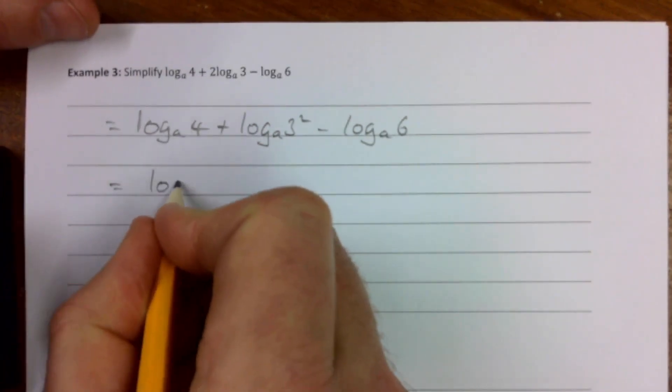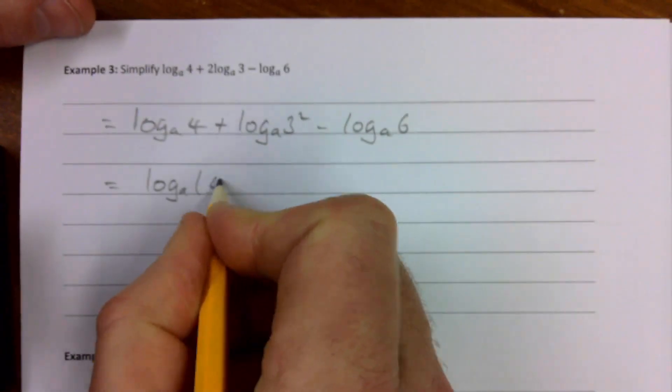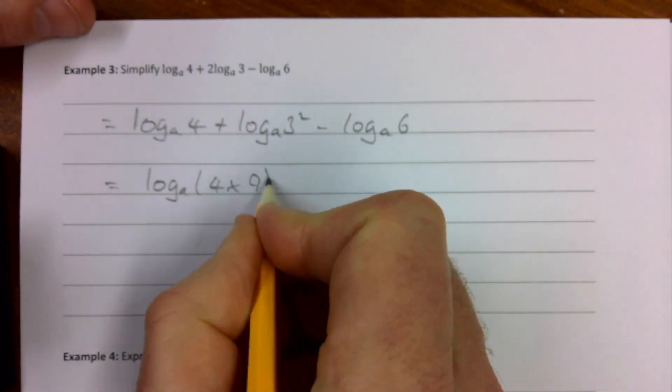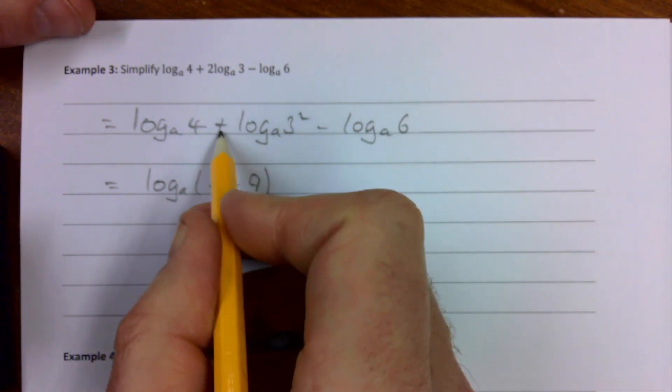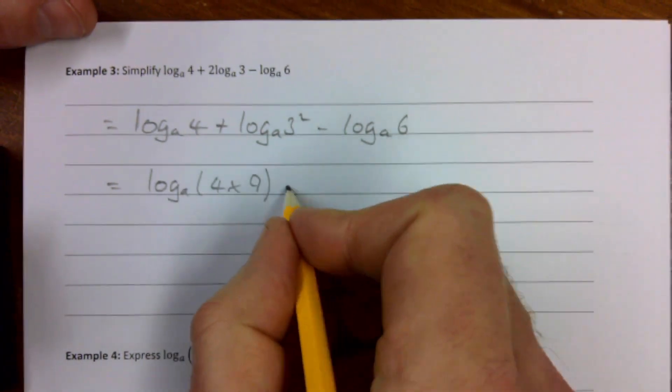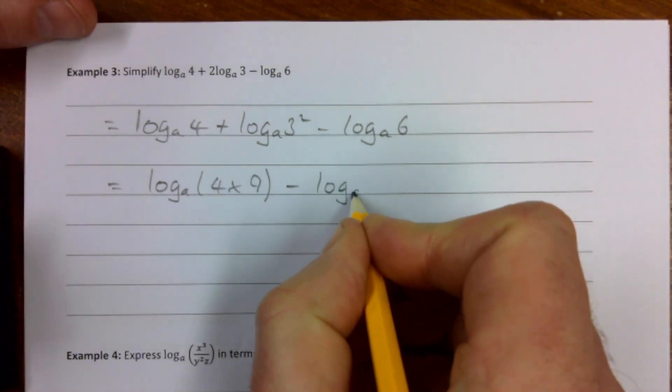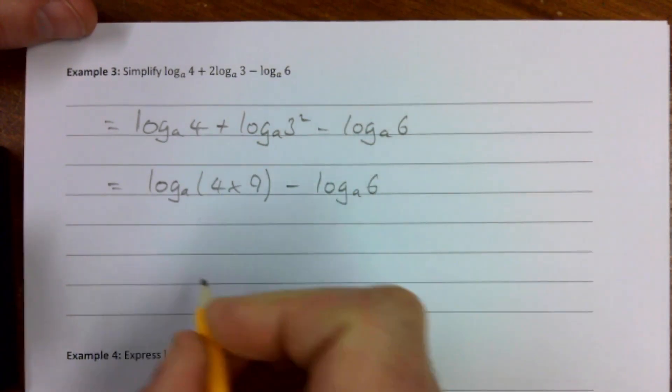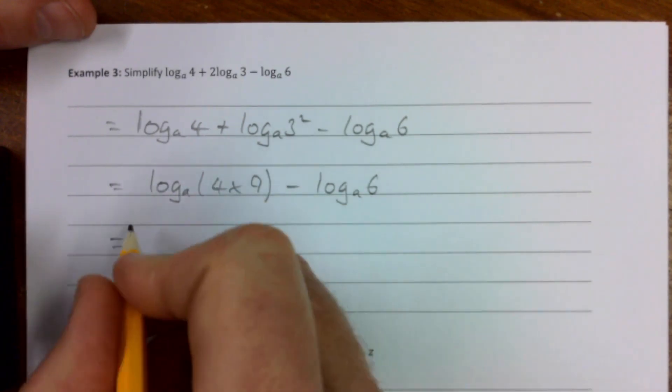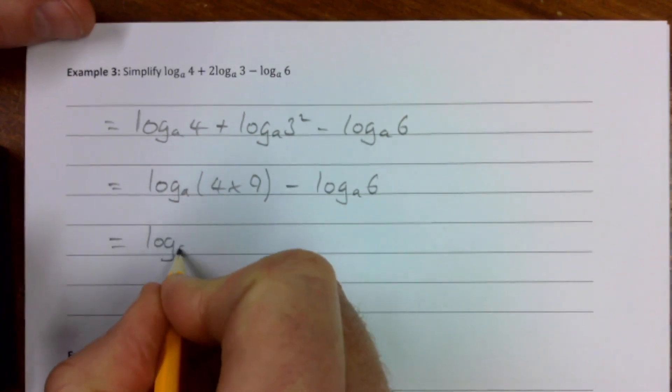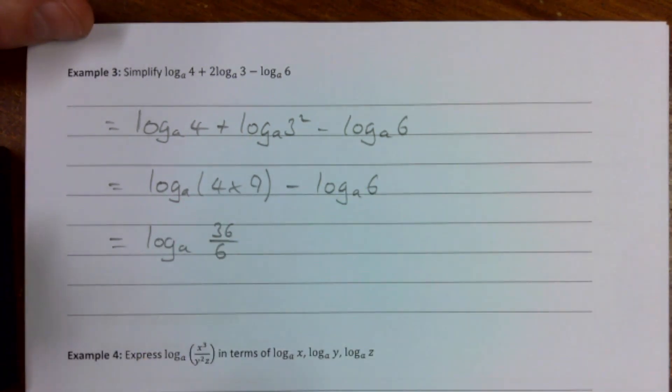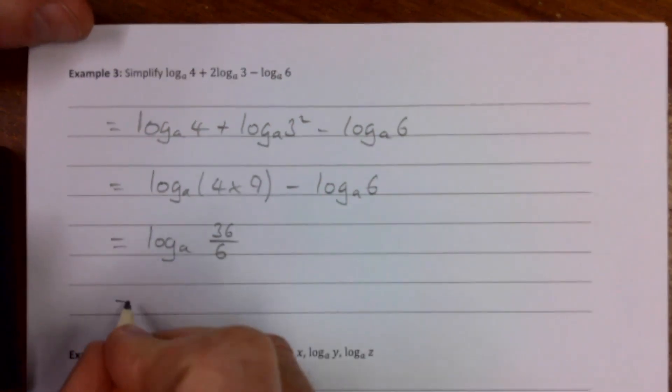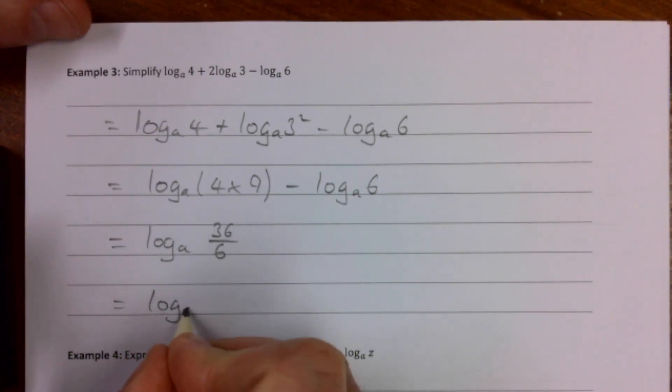That equals log to the base a of 4 times 9. So what have I done? I've squared that 3 to get my 9 and then using the first law of logs, 4 times 9, we have that. Take away log to the base a of 6. Second law of logs means if you're subtracting, so it's log to the base a of 36, which is of course 4 times 9 over 6. And that gives us then log to the base a of 6.